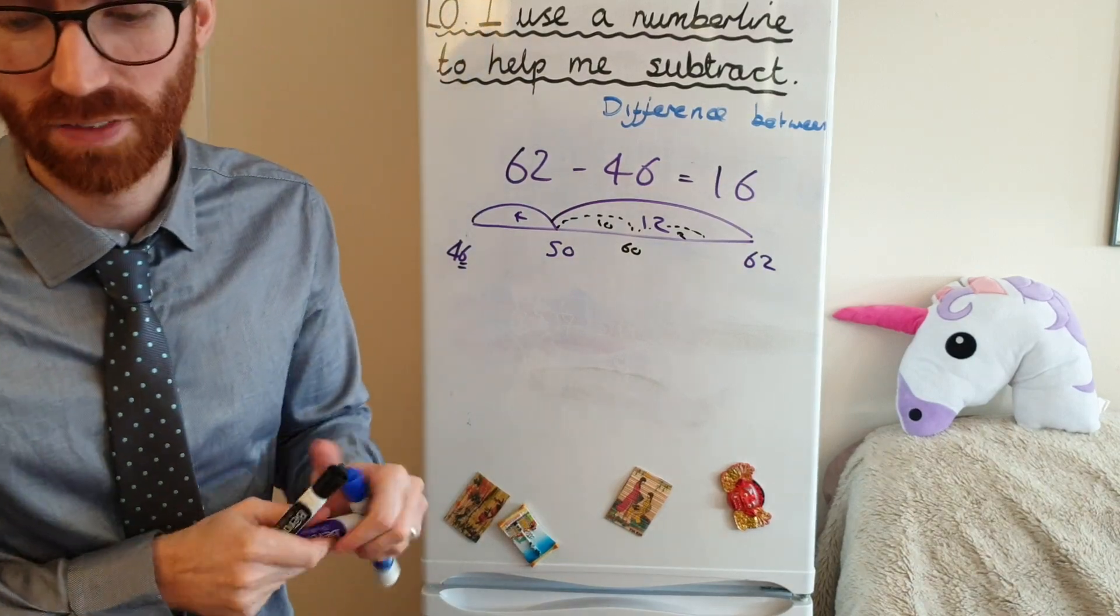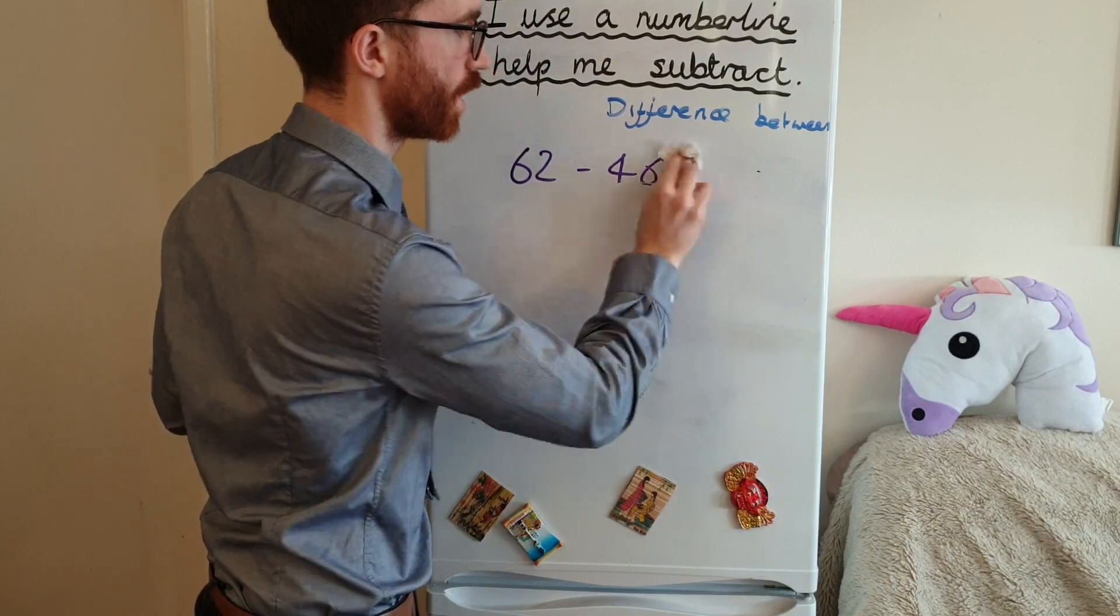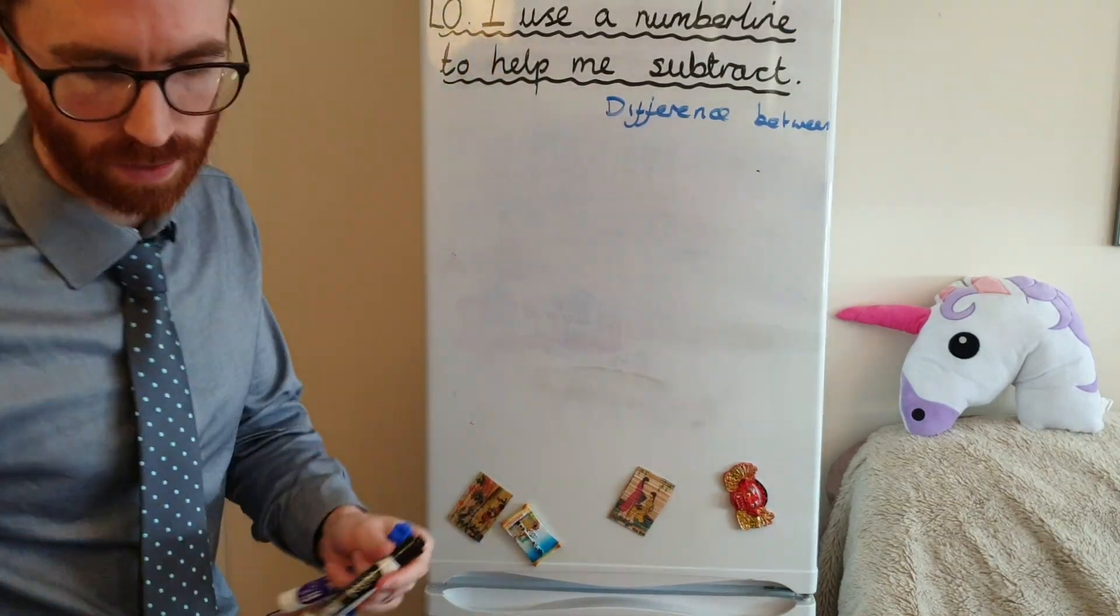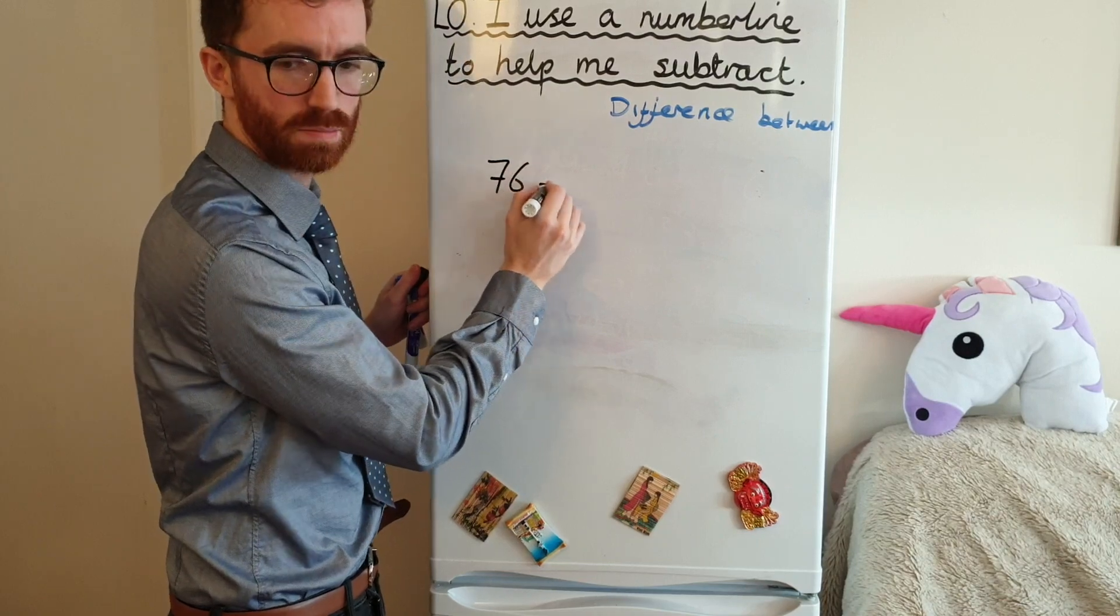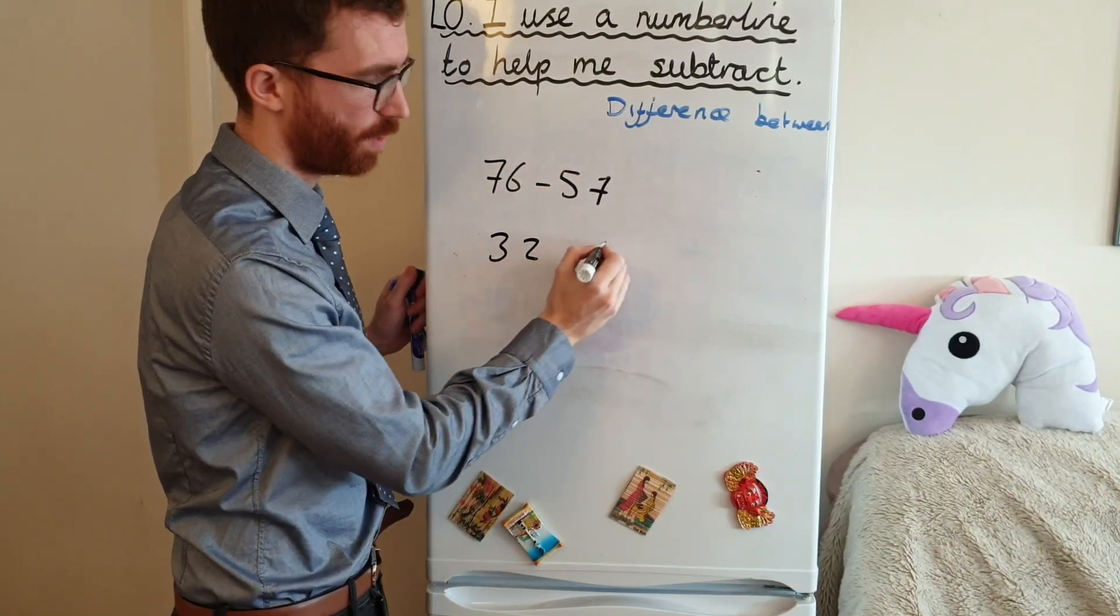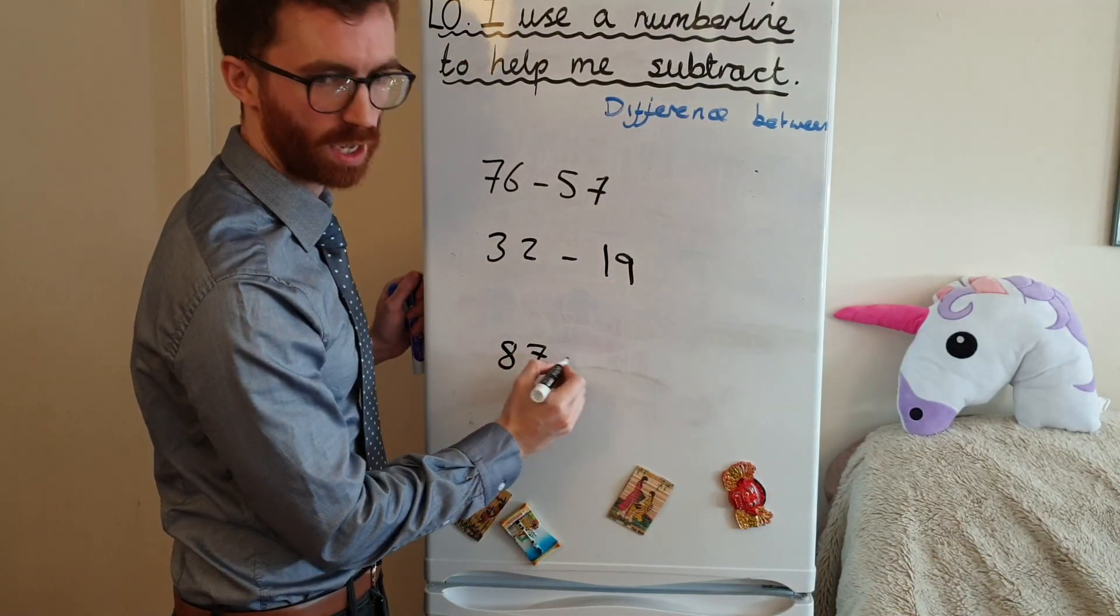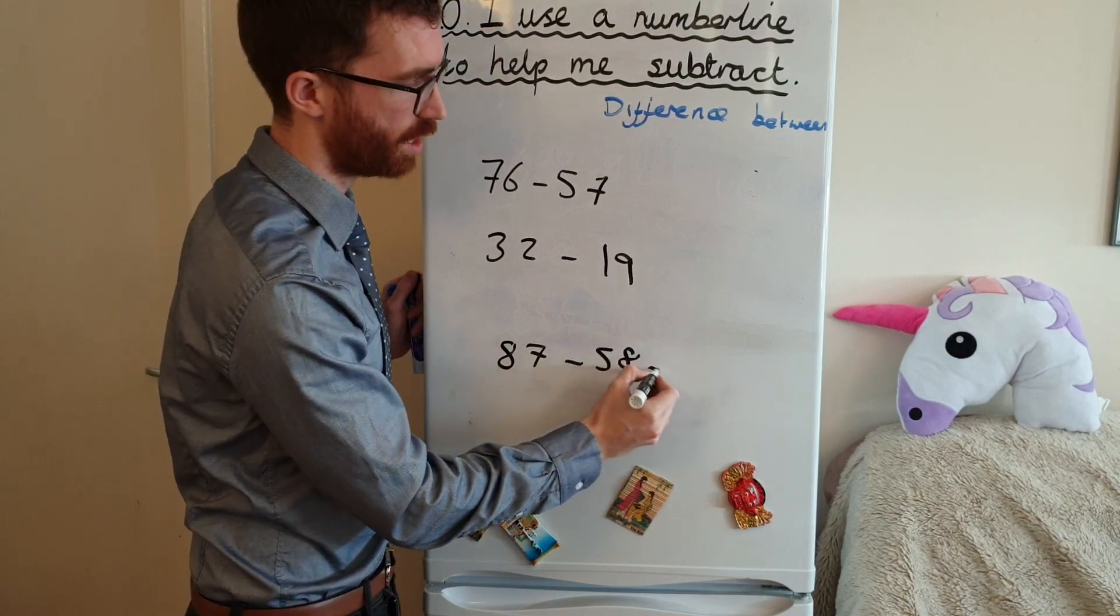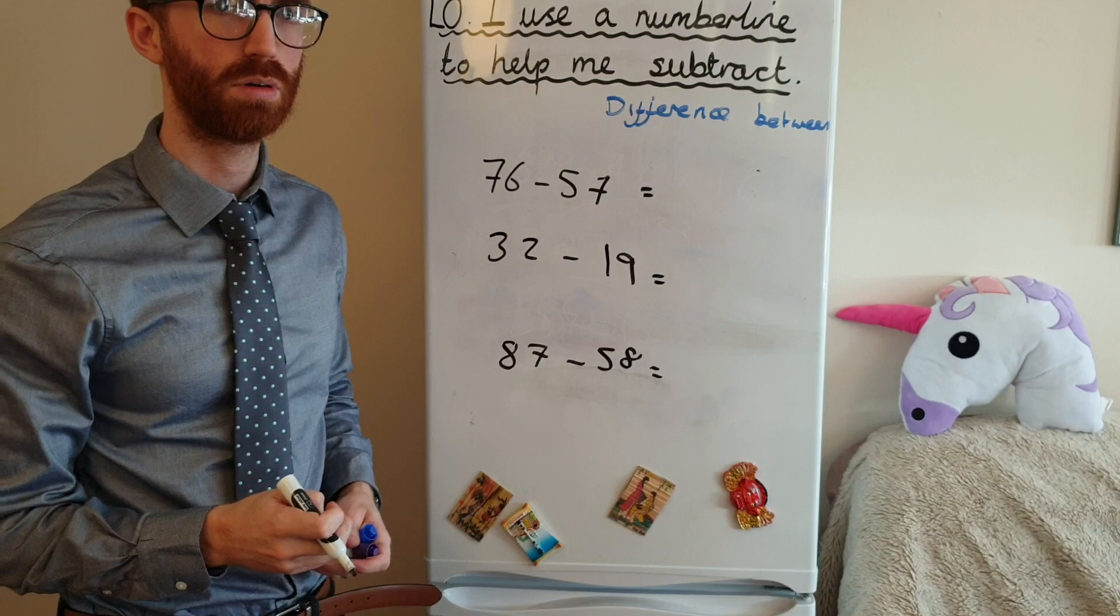Okay, it's your turn to have a little go at some and see how well you do. So let's have a go at this. We'll do 76 minus 57, we'll do 32 minus 19, and we'll do 87 take away 58. Okay, off you go. Pause.